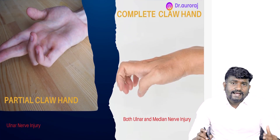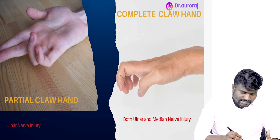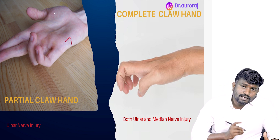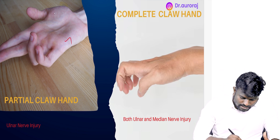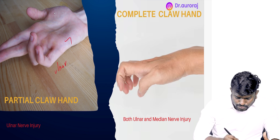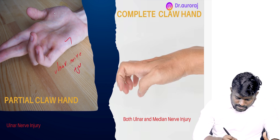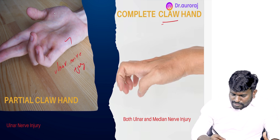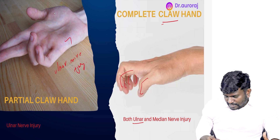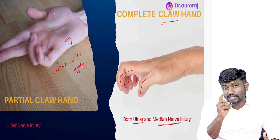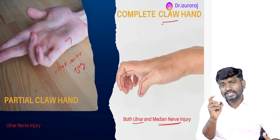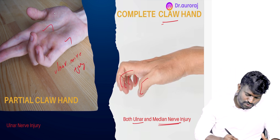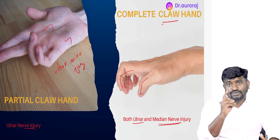Claw hand: partial claw hand and complete claw hand. This image is for partial claw hand, and that is due to ulnar nerve injury. Whereas in complete claw hand, remember, it is due to both ulnar and median nerve injury. So complete claw hand is due to ulnar and median nerve injury, whereas partial claw hand is due to ulnar nerve injury only.